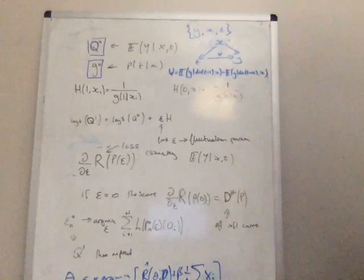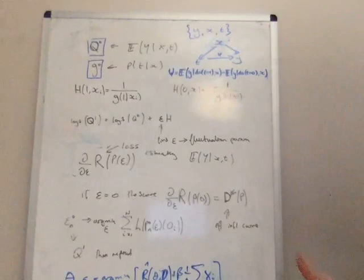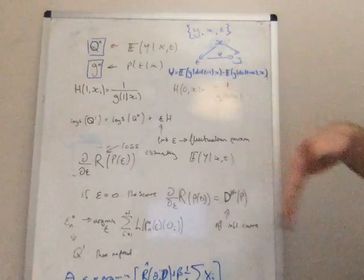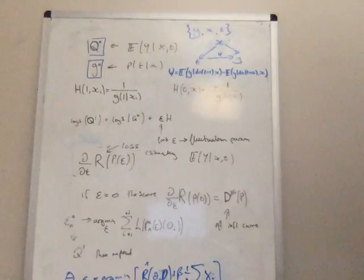So this do notation here, if you're not familiar with it, have a look at do calculus, and it essentially says that we're intervening on this variable T, regardless of what its original value was. We're going to intervene on it and set it explicitly to one and explicitly to zero.